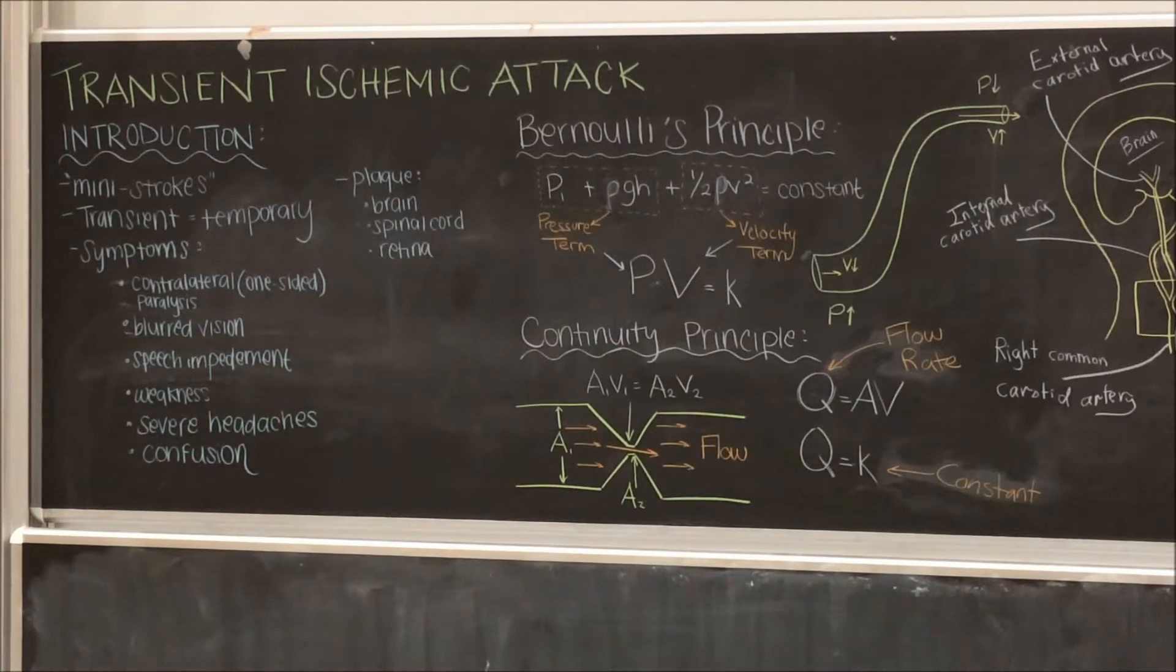The major difference between TIAs and true strokes is that the blockages are transient, meaning temporary. Plaque buildup in the arteries associated with the brain, for example, is dissolved, leading to no infarction of the tissues.